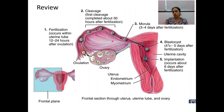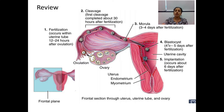The first cleavage is completed around 30 hours after fertilization. The products of mitotic division are called blastomeres. After three to four days, there will be formation of 12 to 16 or more blastomeres. It looks like a mulberry, so this stage is called the morula stage. The division continues and by around four to five days after fertilization, the developing zygote enters the uterine cavity.